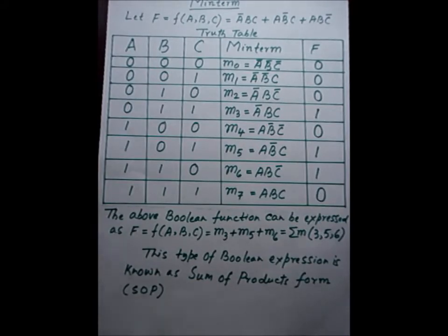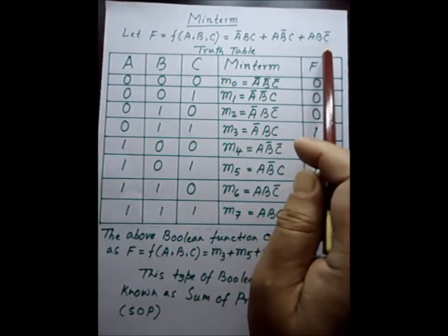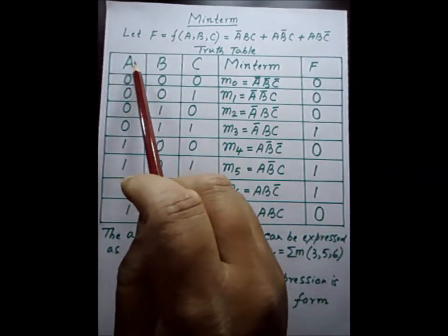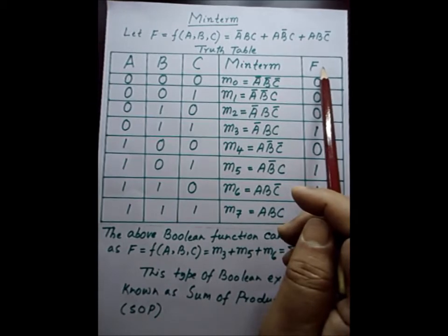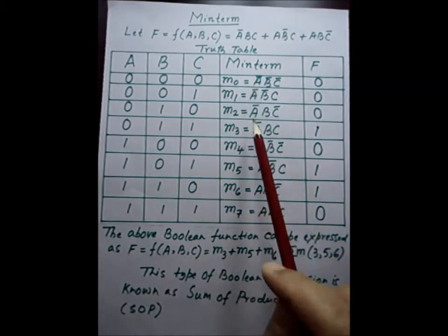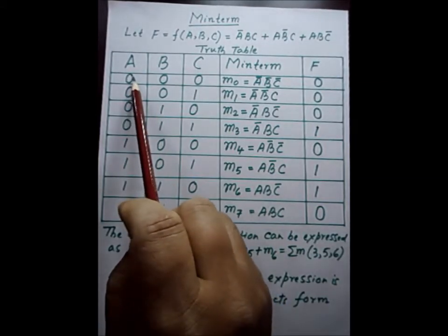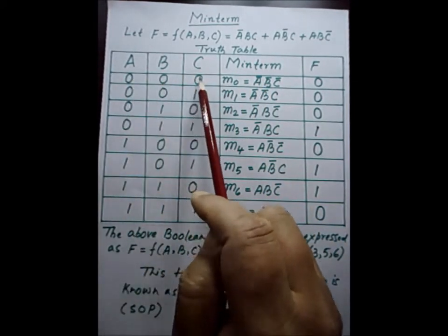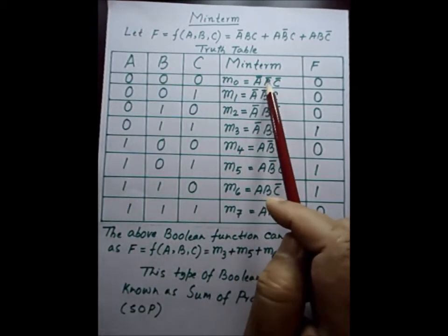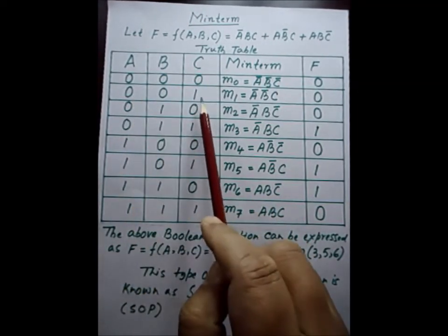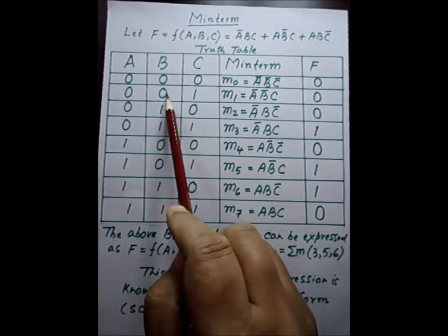Now let us take a Boolean function of three variables. We have shown a three-variable Boolean function and its truth table. We have plotted the variables, the output of the Boolean function, and a column for minterms. All the minterms are products of three variables. Wherever a particular variable is assigned to 0, it becomes complemented. In the first row, a, b, and c are all assigned to 0, so all three are complemented and then the product is taken. In the second row, a and b are assigned to 0, so a and b are complemented.